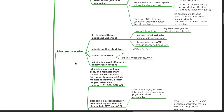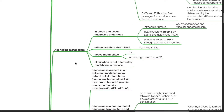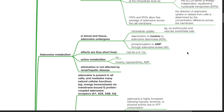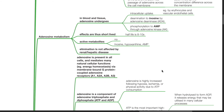Adenosine metabolism: In blood and tissue, adenosine undergoes intracellular uptake, for example by erythrocytes and vascular endothelial cells, and deamination to inosine by adenosine deaminase and phosphorylation to AMP through adenosine kinase. Effects of adenosine are thus short-lived with a half-life of 8 to 10 seconds. There are no active metabolites. Metabolites include inosine, hypoxanthine, and AMP. Elimination is not affected by renal or hepatic disease.